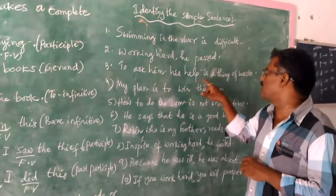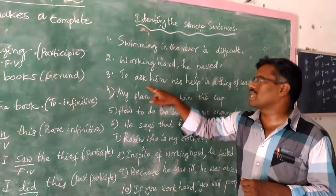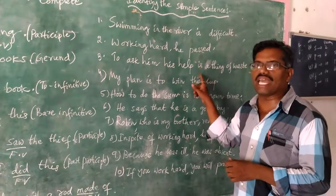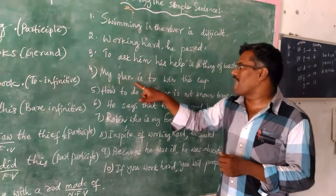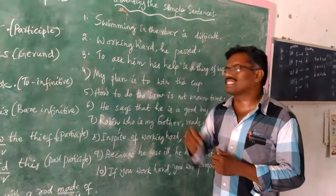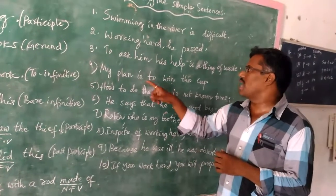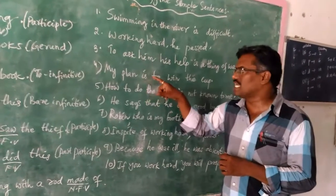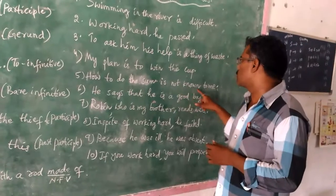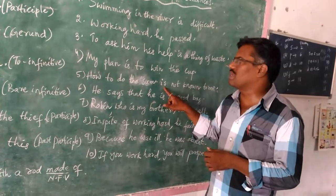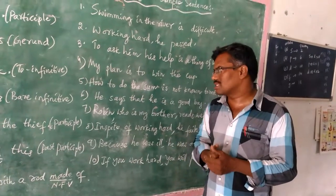Third: 'To ask him his help is a thing of waste.' Here, 'is' is a finite verb and 'to ask' is a non-finite verb. As the sentence carries only one finite verb, this is also called a simple sentence. Fourth: 'My plan is to win the cup.' Here, 'is' is the only finite verb and 'to win' is a non-finite verb, so it is also called a simple sentence. Fifth: 'How to do the sum is not known to me.' Here also, only one finite verb is there and the rest are non-finite verbs, so this is also called a simple sentence.